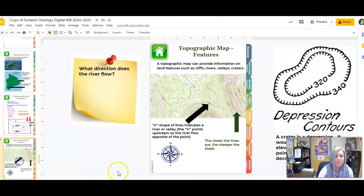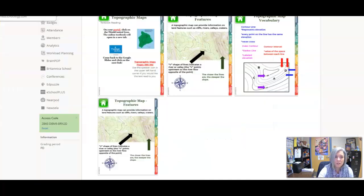On slide 38, you're looking at some of the features that would be found on a topographic map, such as a river or in this case over here a depression such as what a crater might leave behind.